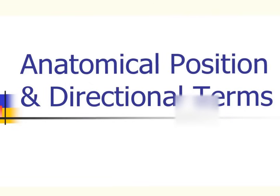This video will cover the anatomical positions and directional terms associated with the human body. The anatomical directional terms are like the directions on a compass — like north, south, east, and west — they can be used to describe the location of structures in relation to other structures located in the body. This is particularly useful when studying human anatomy as it provides a common method of communication that will help us avoid confusion when we identify various structures.